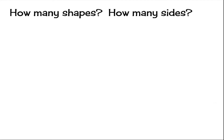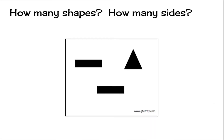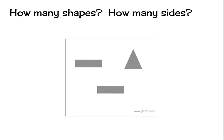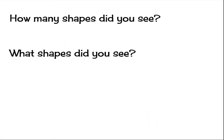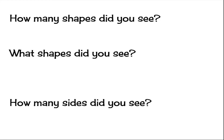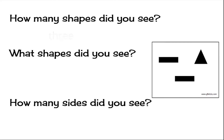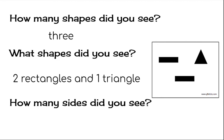Here we go — get ready. How many shapes did you see? And what shapes? There were three shapes: two rectangles and one triangle. So if each rectangle has four sides and the triangle has three sides, four plus four plus three equals eleven sides.